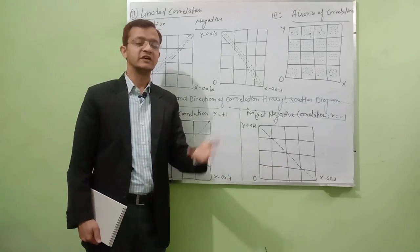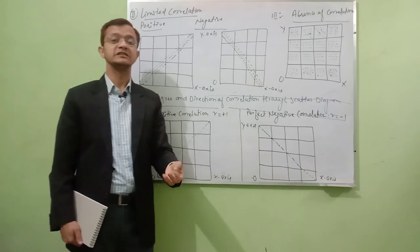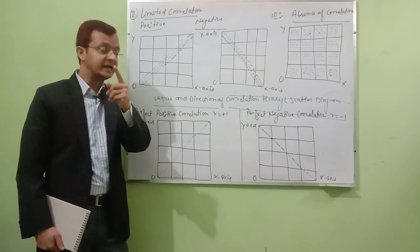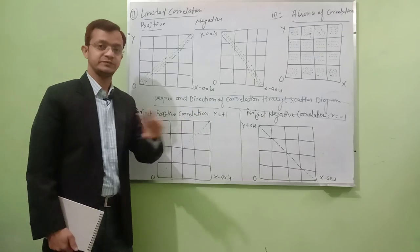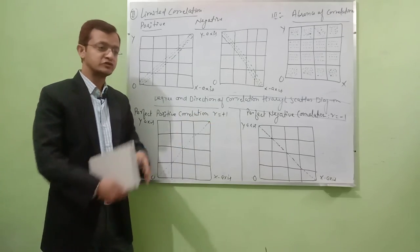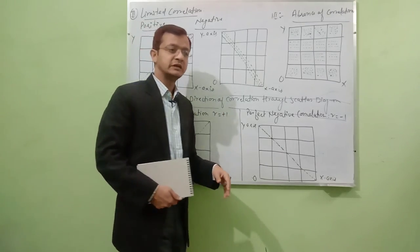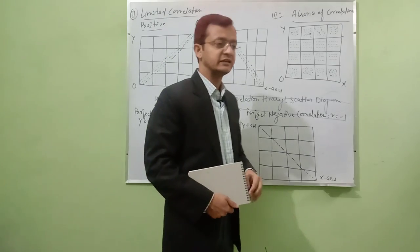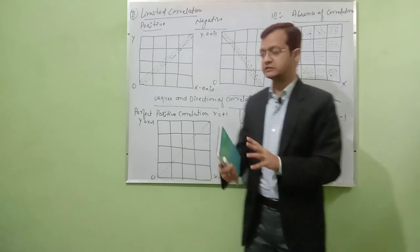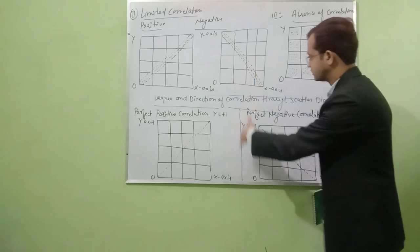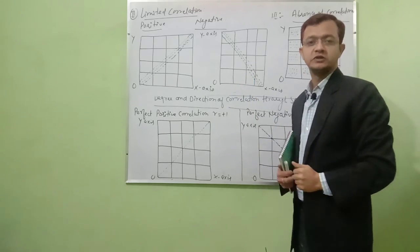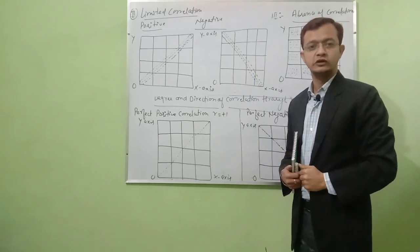Karl Pearson's coefficient of correlation is denoted by small r. We will discuss it in detail along with illustrations in the next lecture. Today's lecture is enough. Thank you very much.